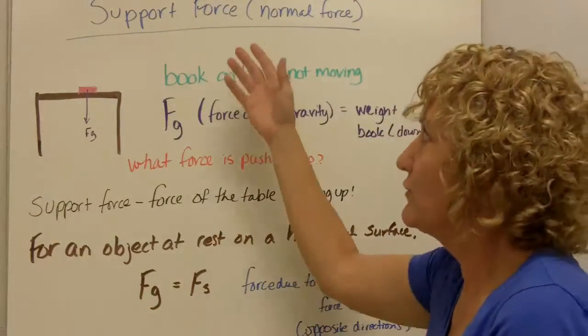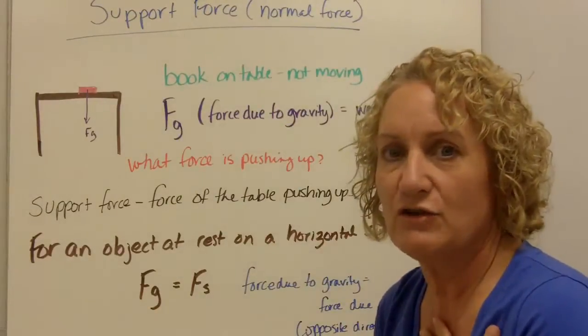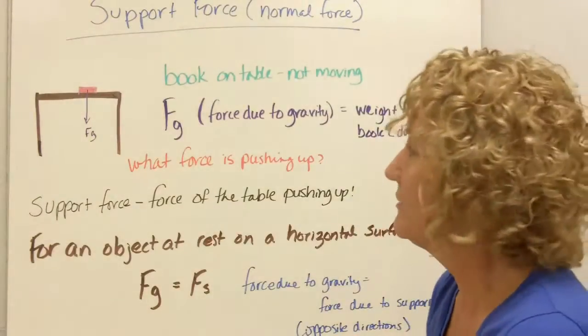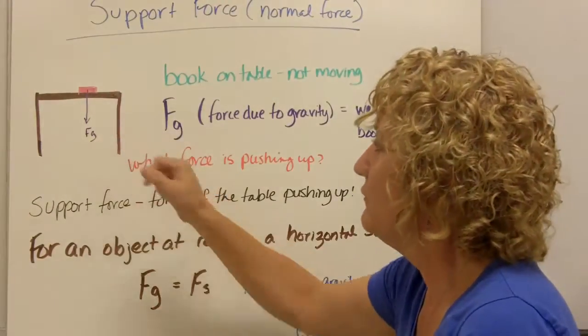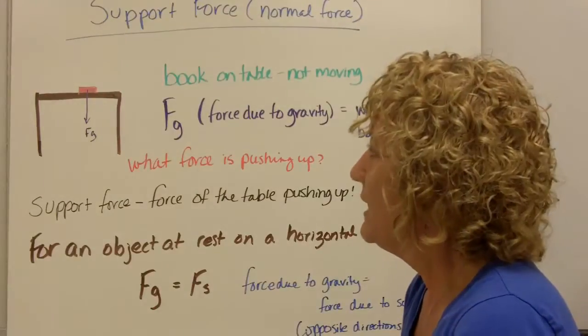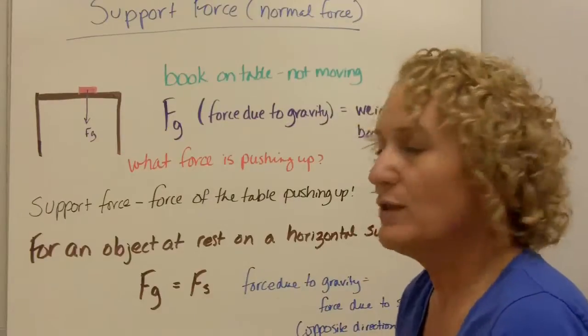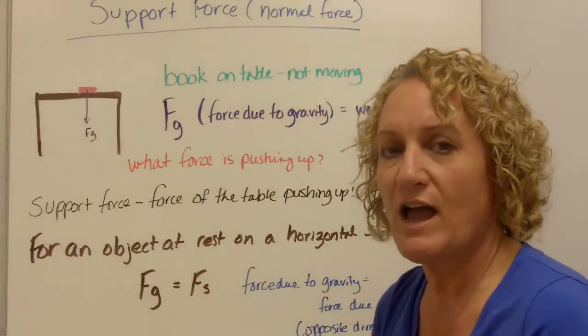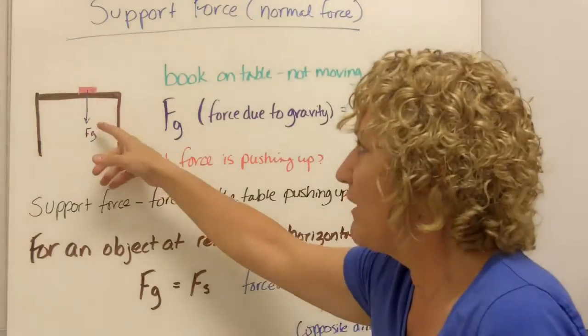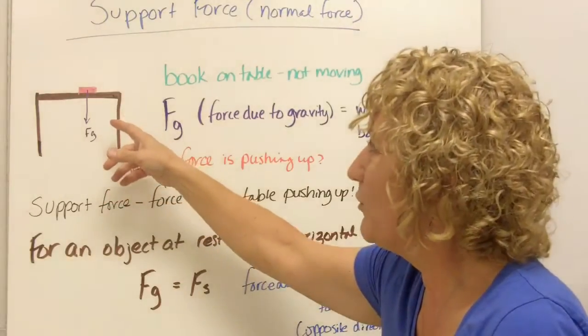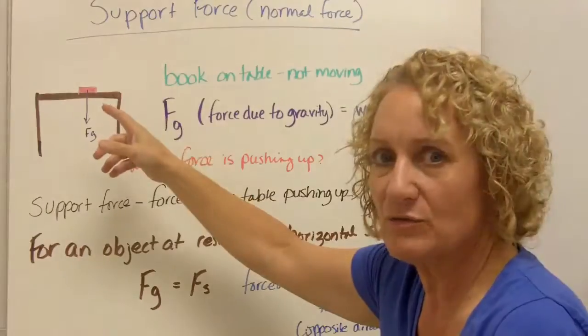So now we have another force called the support force. I learned it as a normal force, but it's now called the support force because that's really what it does is support. So this is my beautiful picture of a book sitting on a table, and it's not moving. The book's just sitting there. So let's talk about what forces are acting on it. Now we know the force of gravity is acting downward. That's the weight of the book. But what is keeping that book? What's the other force in the opposite direction?